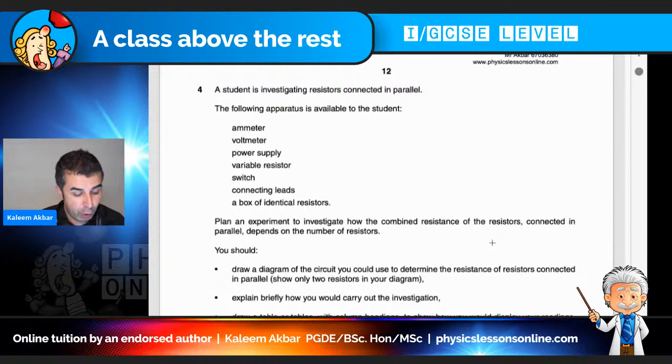So a student is investigating resistors connected in parallel. So quite clearly from the electricity and magnetism topic. The following apparatus is available to the student: an ammeter, a voltmeter, power supply, variable resistors, switch, connecting leads and a box of identical resistors. So it says, plan an experiment to investigate how the combined resistance of the resistors connected in parallel depends on the number of resistors.